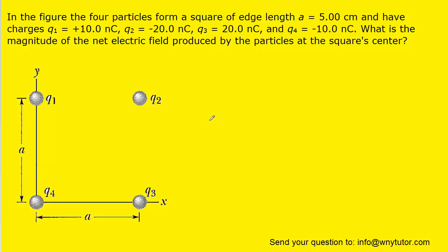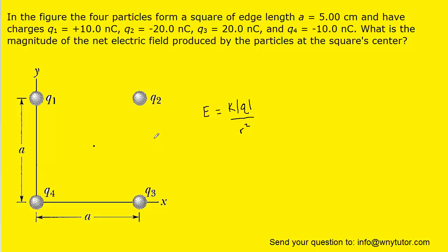If you haven't done so yet, please pause the video and try to answer this question on your own before listening on. We're going to make a little mark here at the center of this square so that we can remember where we're trying to calculate the net electric field. Now because there are four point charges, it's going to be worthwhile to look at the electric field produced by point charges. We'll have the four electric fields, and then we're going to end up breaking them into both their x and their y components.